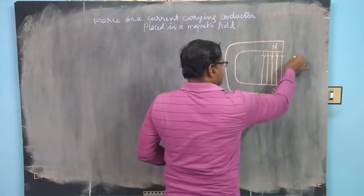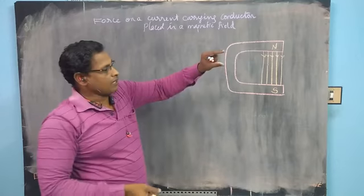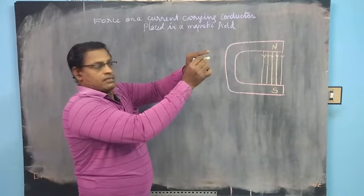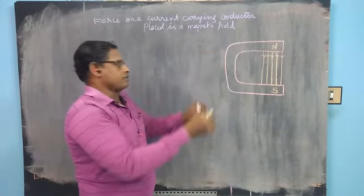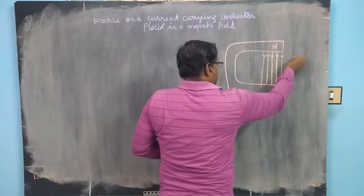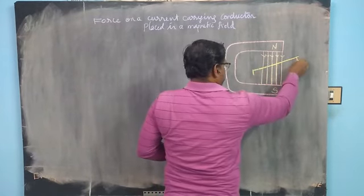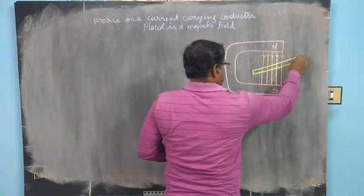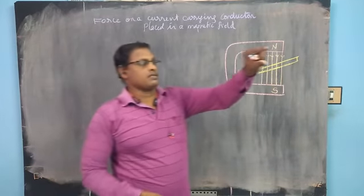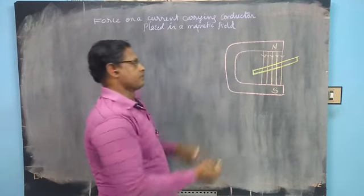Here we are placing a conductor in the perpendicular direction. If this is the U-shaped magnet, you keep your conductor here like this. You consider an aluminum conductor — if this is the U-shaped magnet, you are keeping the conductor like this.